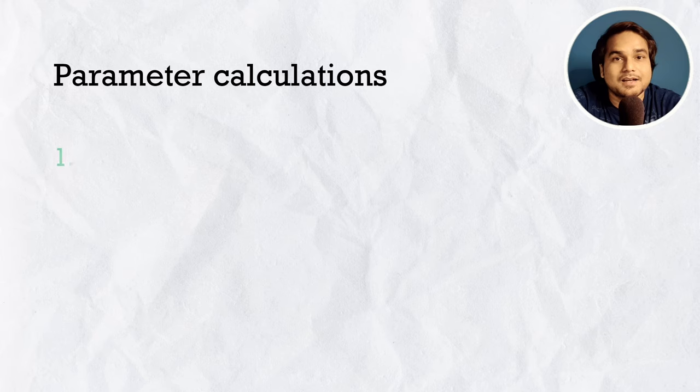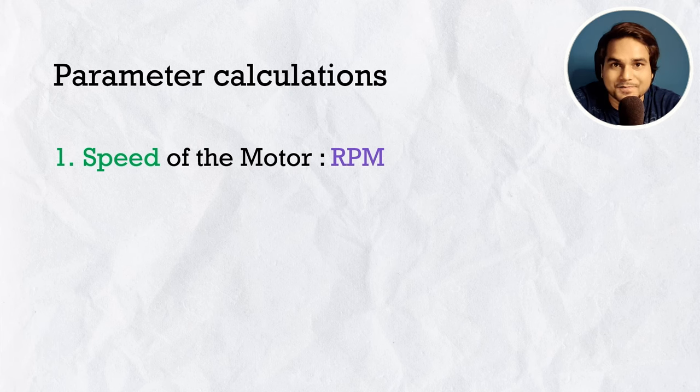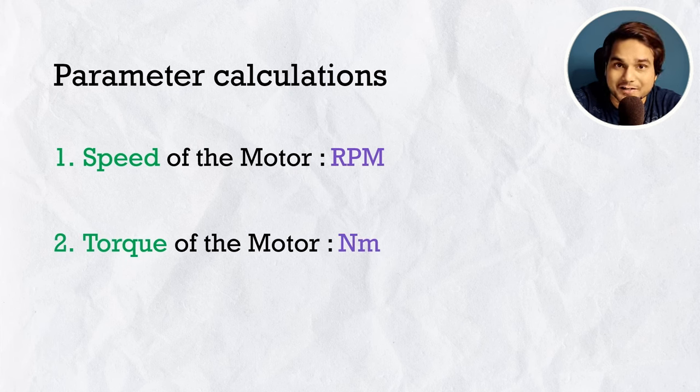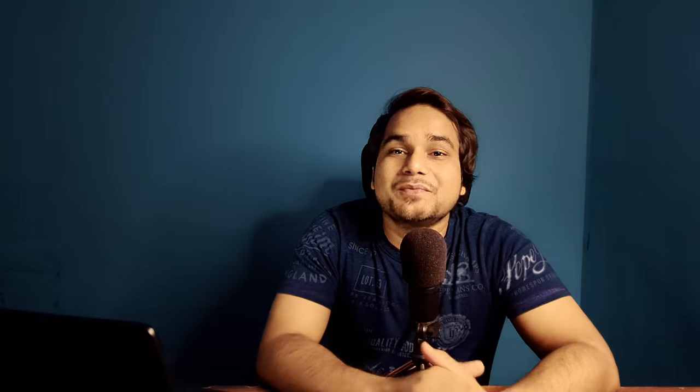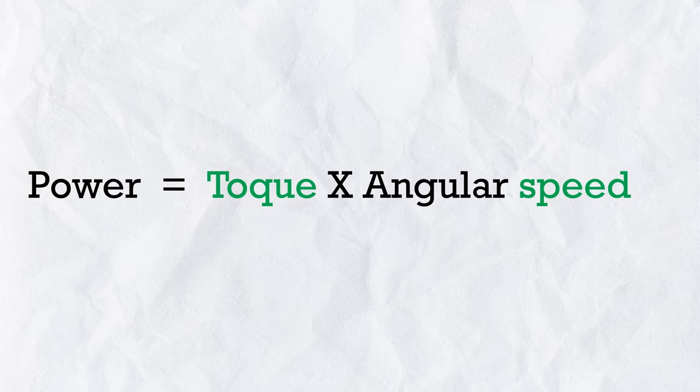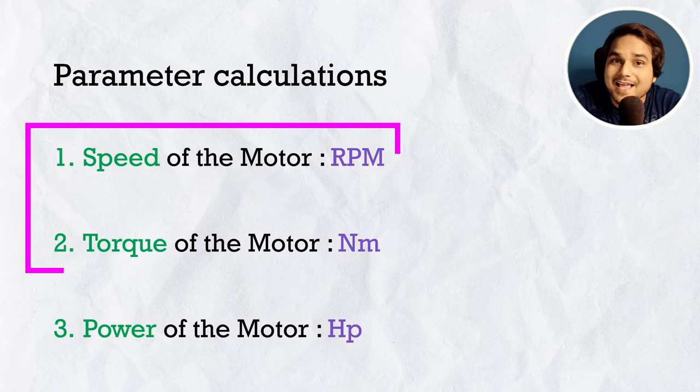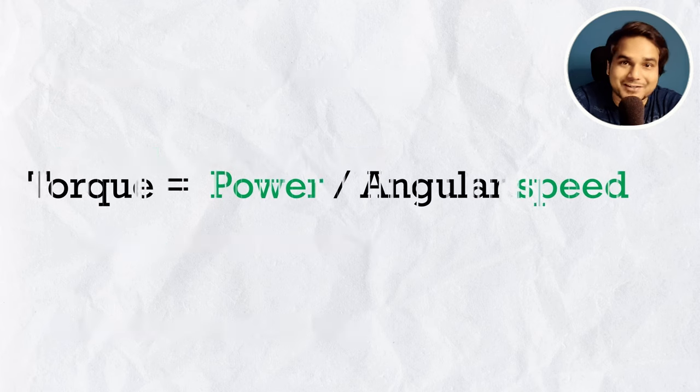First, what are the parameters we need to calculate to make the selection of motor and gearbox for a belt conveyor? Number one: required speed of the motor. Number two: required torque of the motor. Number three: required power of the motor. We only need to calculate two of these parameters because power equals torque multiplied by speed — so knowing any two gives us the third.